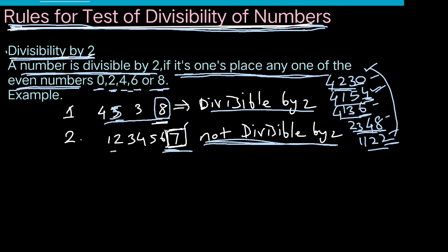Second example: the unit place last digit is 7. So 7 is an odd number, so this odd number is not divisible by 2. When divided by 2, remainder is 1.